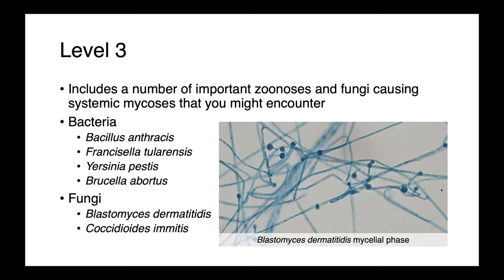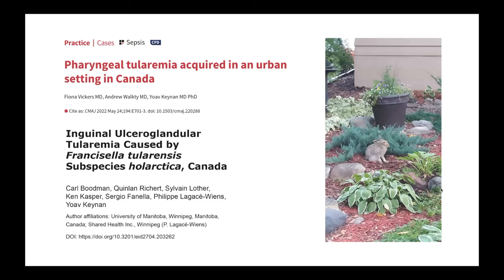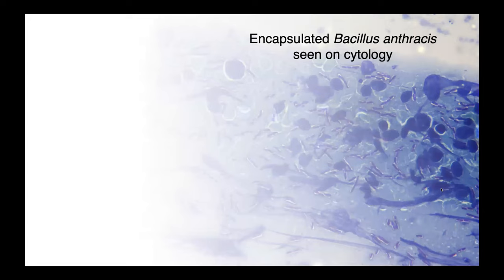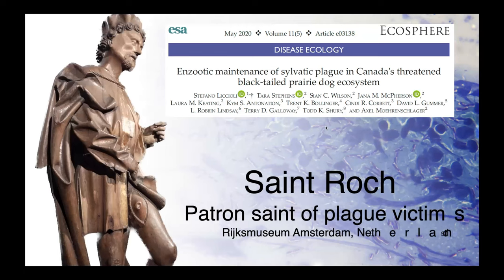Fungi such as Blastomyces dermatitidis and Coccidioides immitis are also level three organisms. These are all bacteria and fungi that you may in fact encounter in western Canada. Francisella tularensis is present in wild rodent and lagomorph populations in Saskatchewan and Manitoba, and people can become exposed on contact with these animals or potentially the vectors that carry them. Bacillus anthracis is also present in western Canada and certainly the southwestern United States — you can see encapsulated Bacillus anthracis here, rod-shaped bacteria surrounded by these lucid capsules. This has been identified in the black-tailed prairie dog ecosystem in southern Saskatchewan.